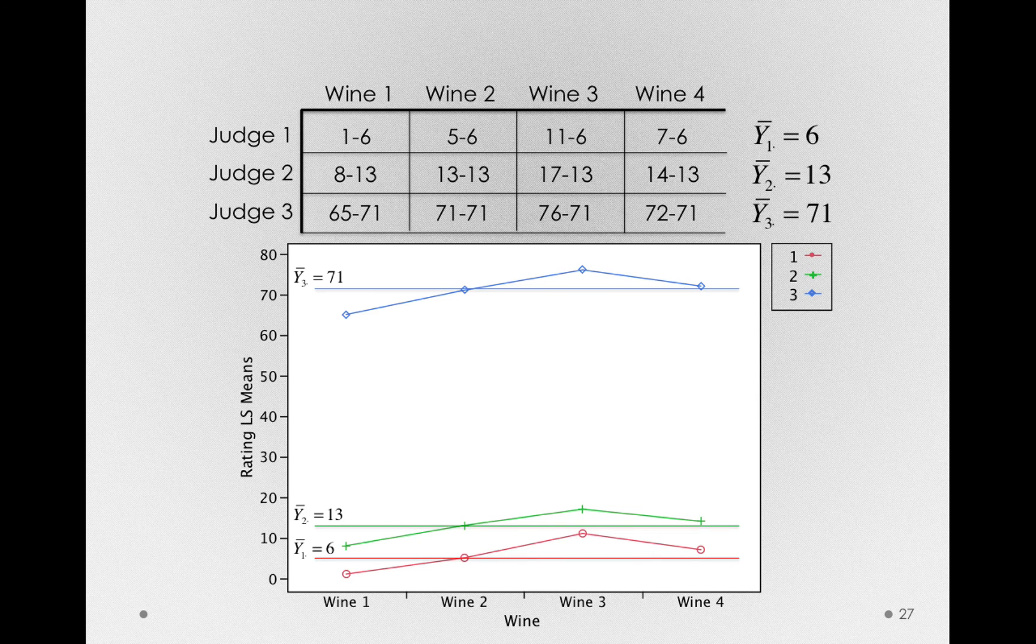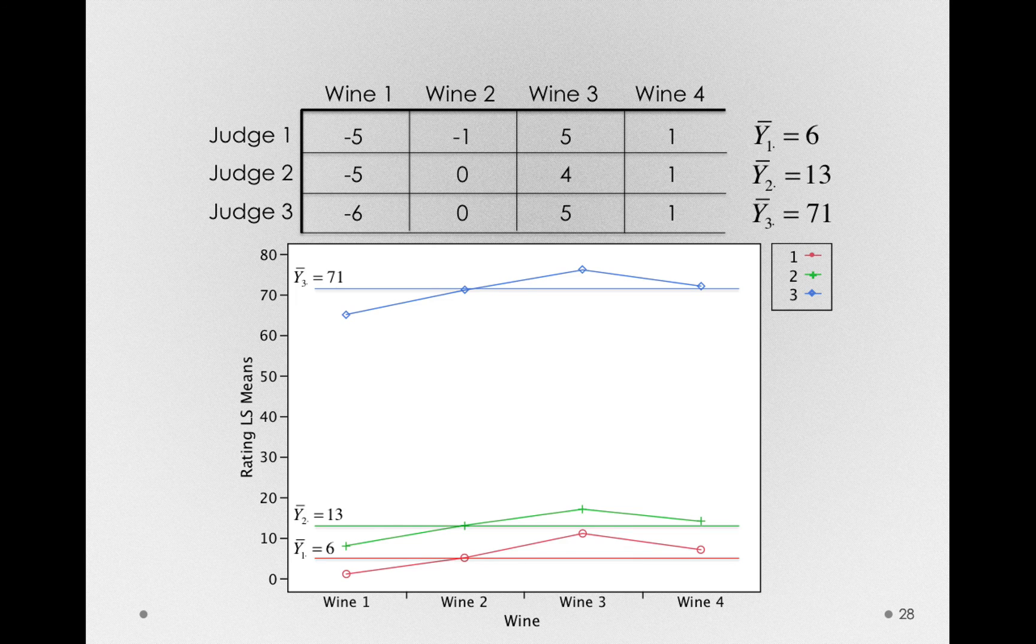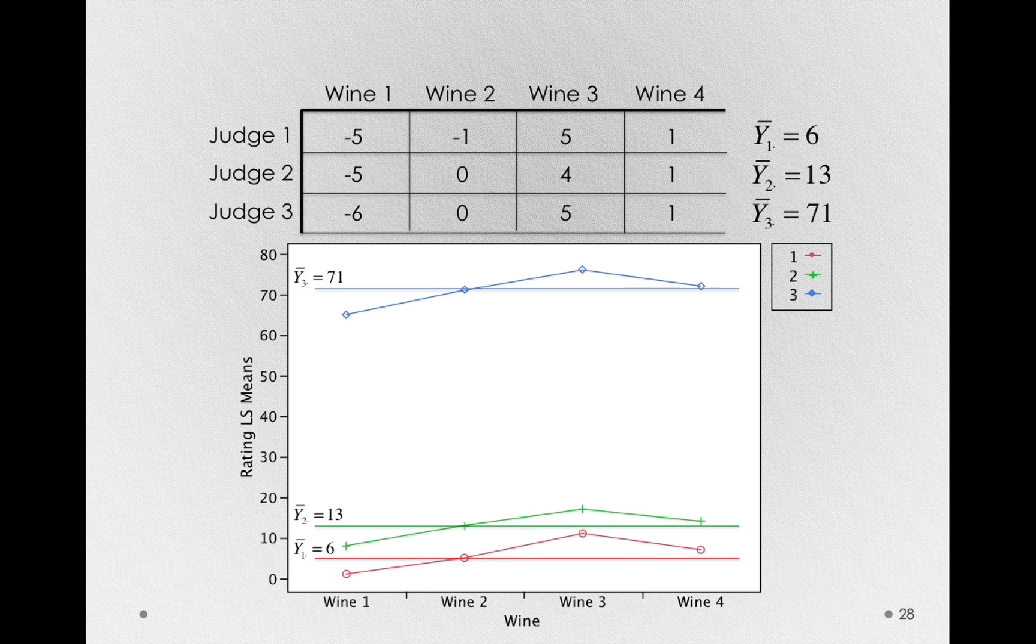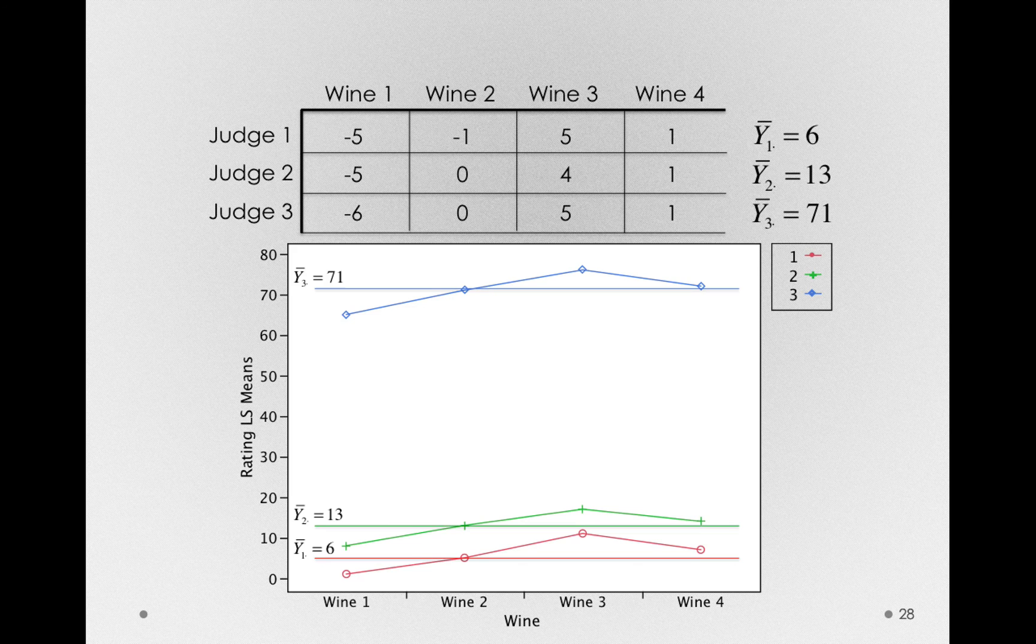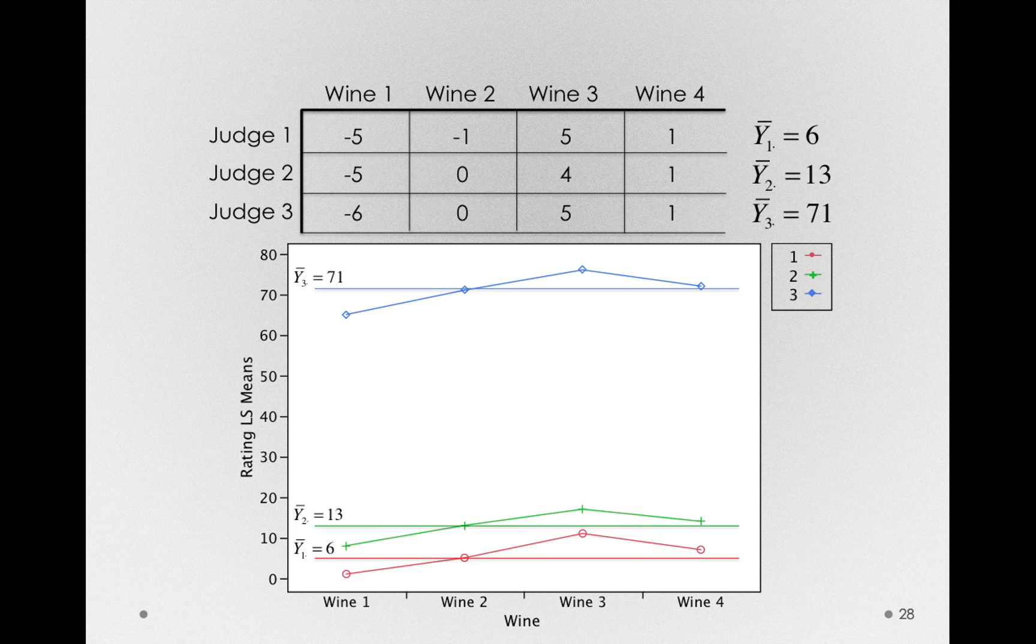When I do this, I want you to see something about our table. The ratings here are actually much less variable. We can see, relative to what they would rate on average, how much above or below their average rating they would rate each of our wines. We've removed that between-subject variability. We've removed the individual differences that have nothing to do with the wines, but have everything to do with each judge's preferences for how they make ratings.